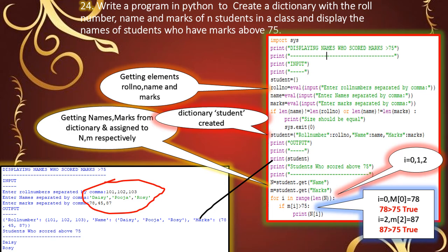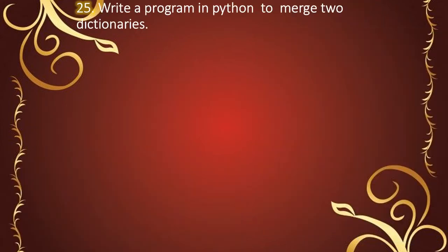45 is not greater than 75, so it won't display anything. Next, i equals 2, m[2] is 87, which is greater than 75, so the condition is true and n[2] displays Rosie. Thus, Daisy and Rosie are the two students who scored above 75.